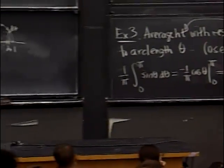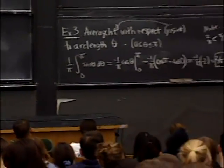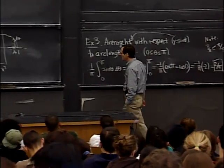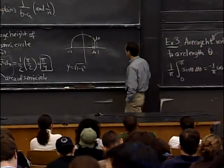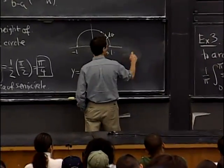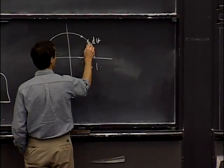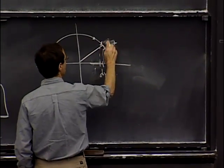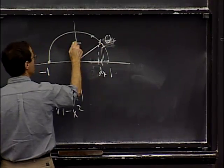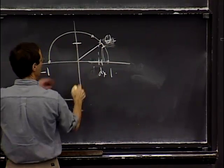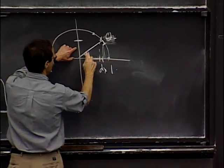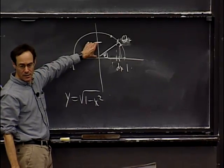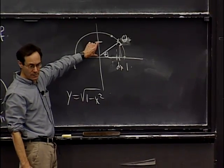A student asks how we got sin theta. The answer is that on the diagram, if theta is the angle, then the height is the sine. If theta is the angle measured from the horizontal, then the height of the point on the unit circle is sin theta.